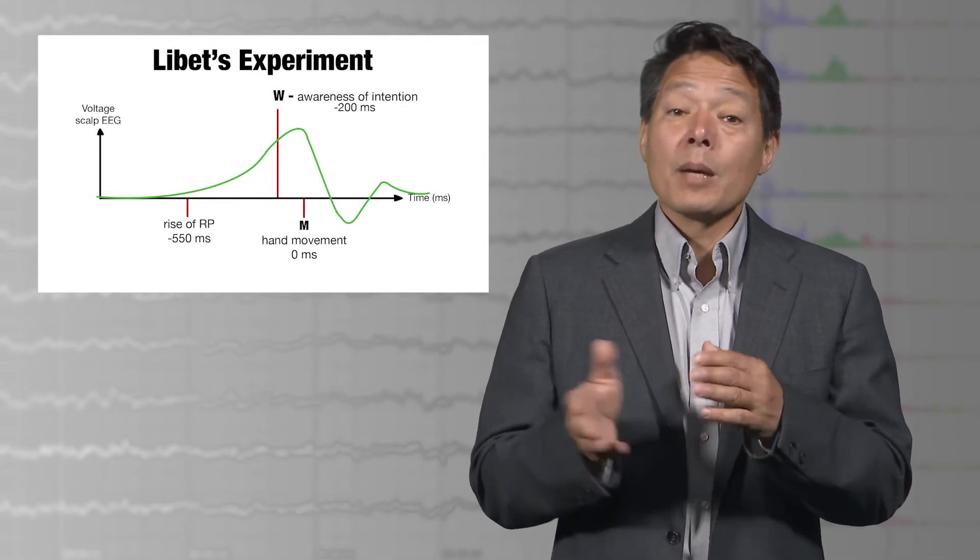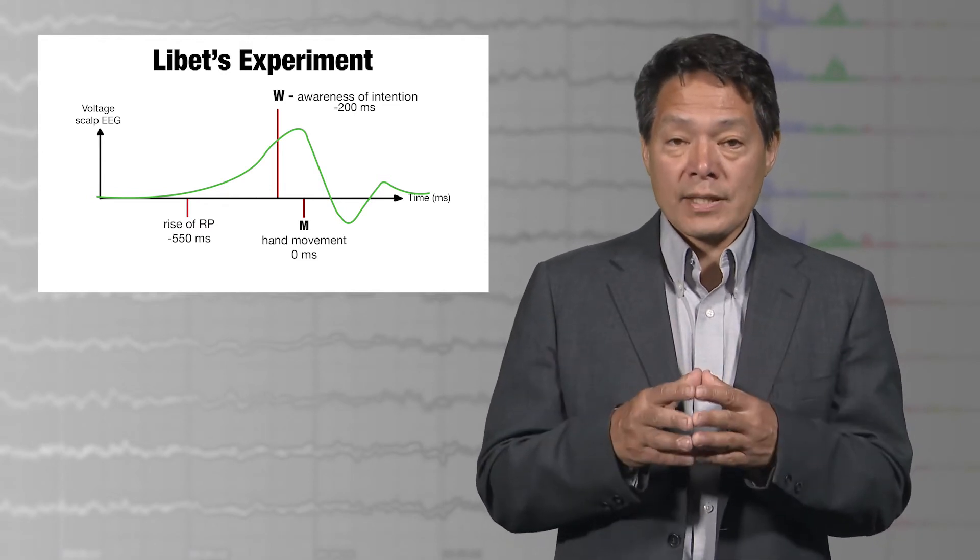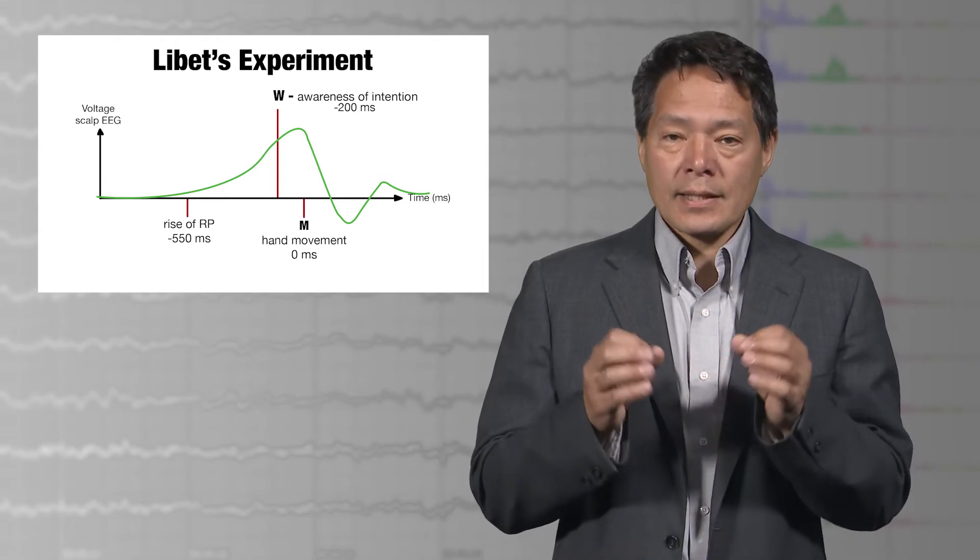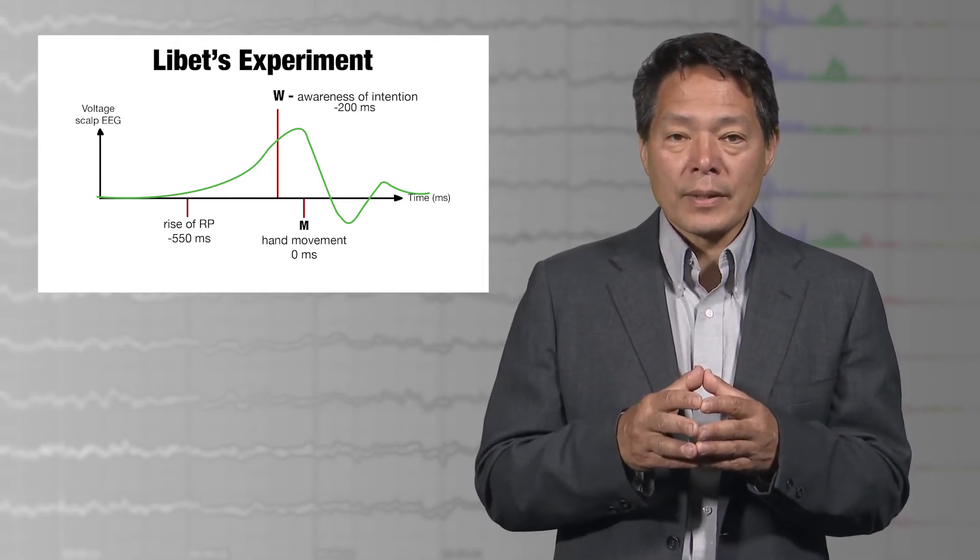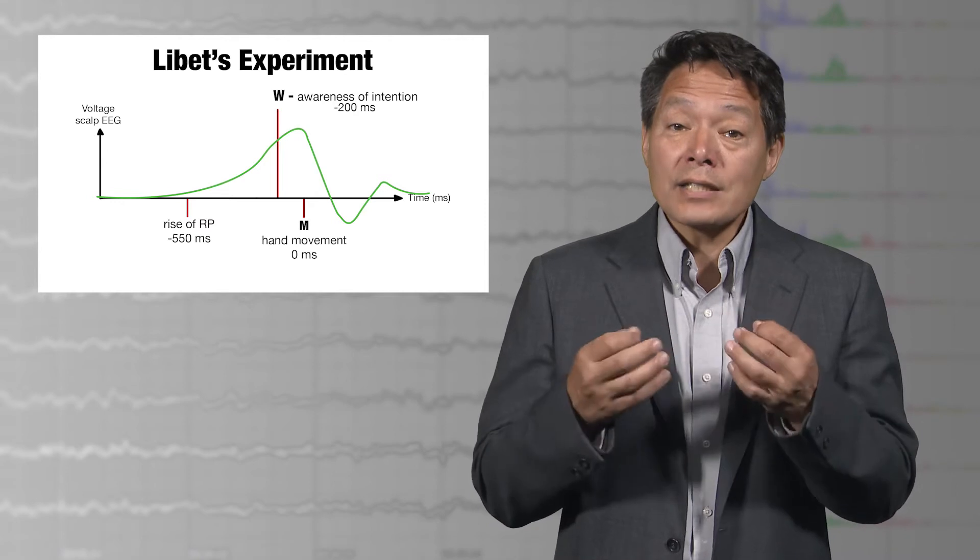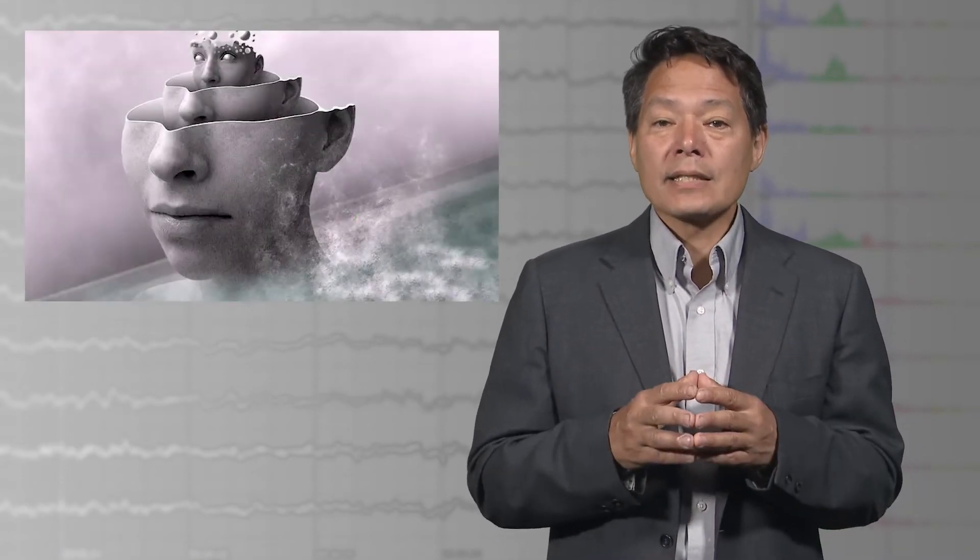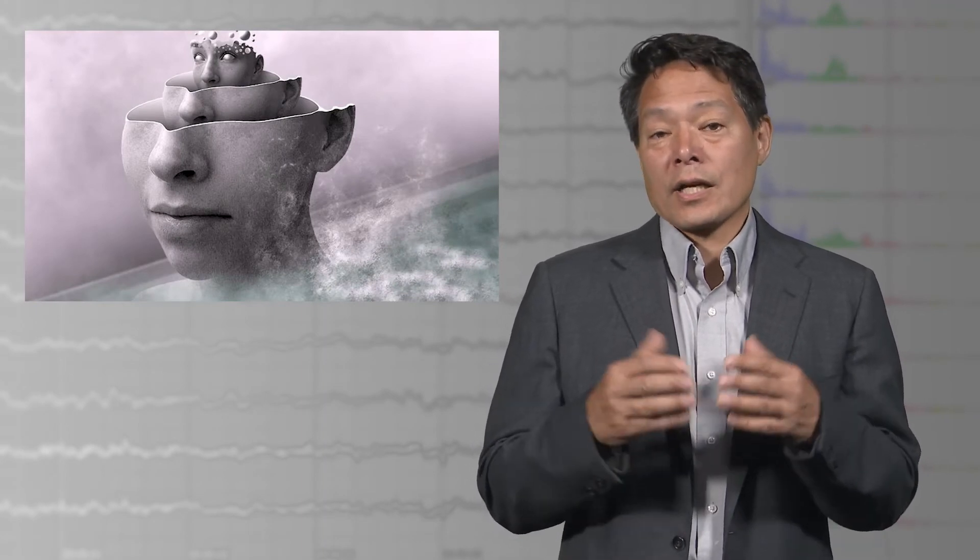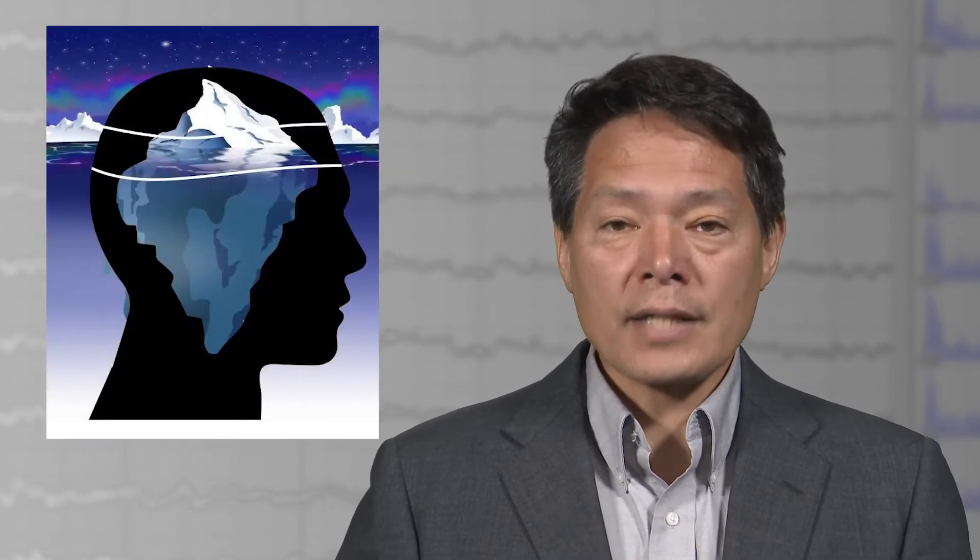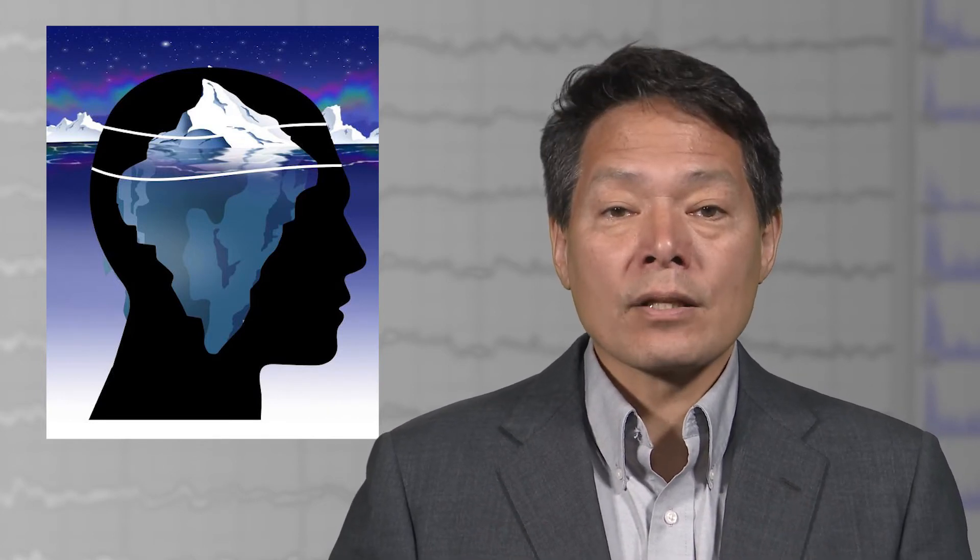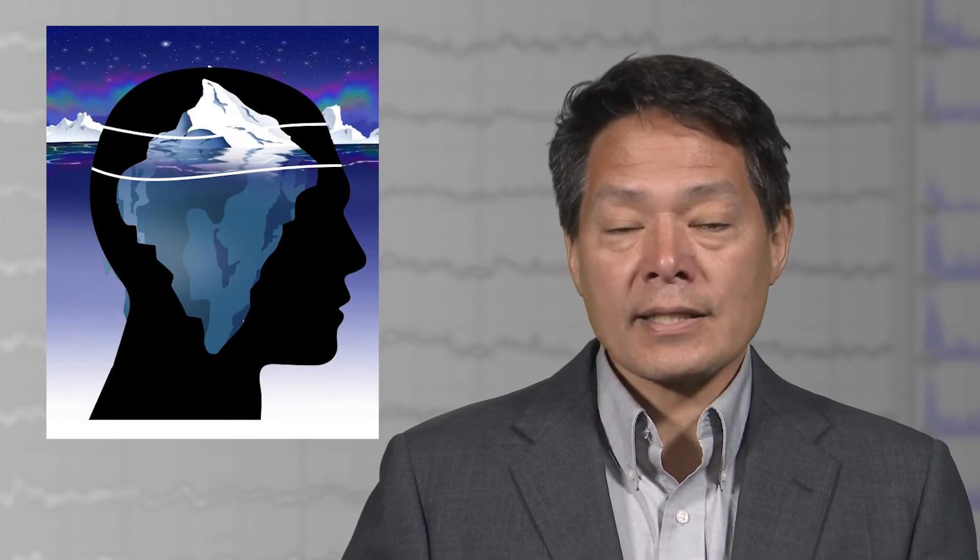Basically, if something pre-conscious and unconscious precedes our conscious willing by several hundred milliseconds, maybe that unconscious process is the actual cause of our volitional movement. Maybe the conscious willing itself only seems to cause our motor act. Since we do not seem to have control over our unconscious processes and can't even report what they are, if everything is decided unconsciously, there's no room for our consciousness to be in control of our actions or, presumably, to have chosen otherwise than those unconscious processes already decided for us.